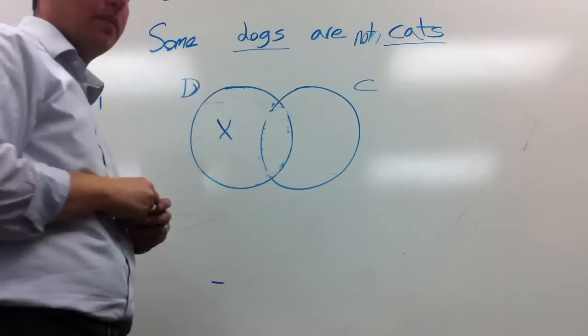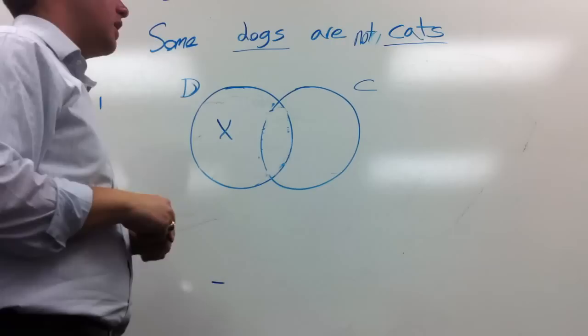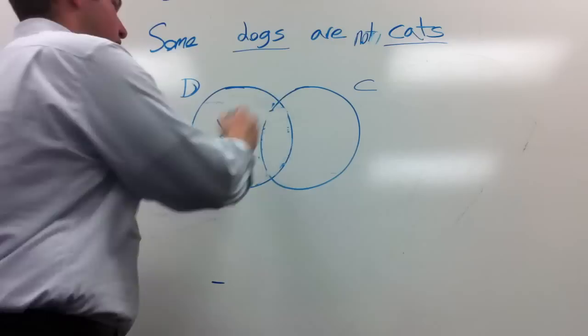You can see there's a lot of similarities between these. O statements have something in common with A. The only difference between an I and an O is that for an O, we put an X. For an I, we shade.